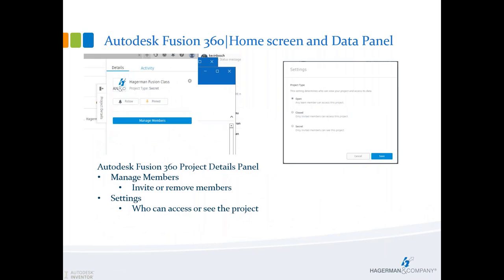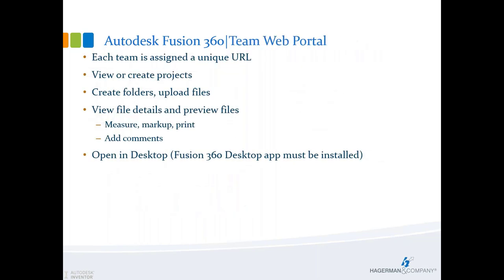Going a little bit deeper, we can look at a details flyout panel and that allows us to manage some of the members — we can invite or remove members. We can also set who can actually see our project, who can access it — makes things kind of nice. From within the Fusion interface, we can actually jump to the team web portal. Each team is assigned a unique URL and we'll take a look at that here in just a minute.